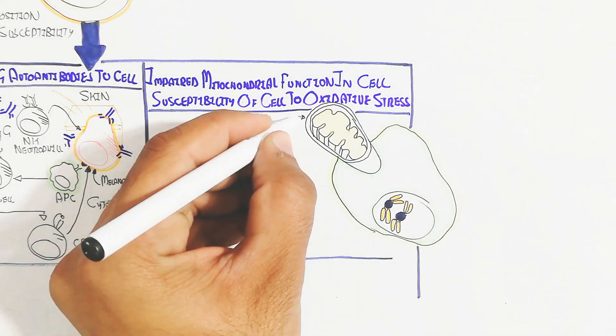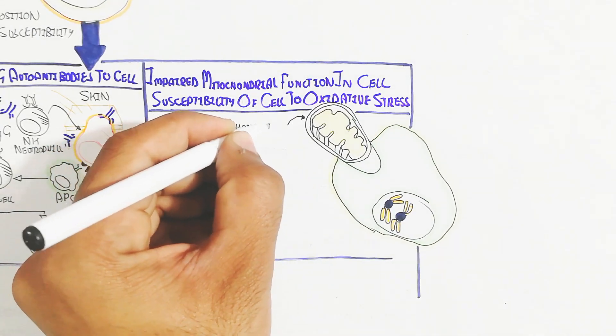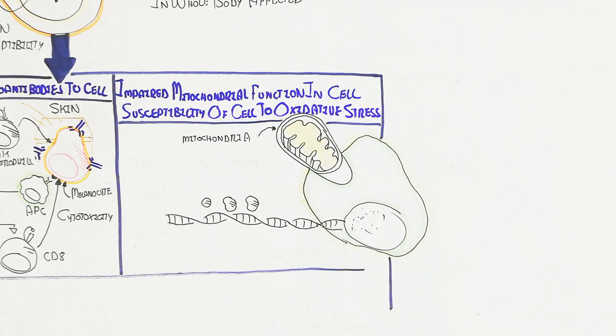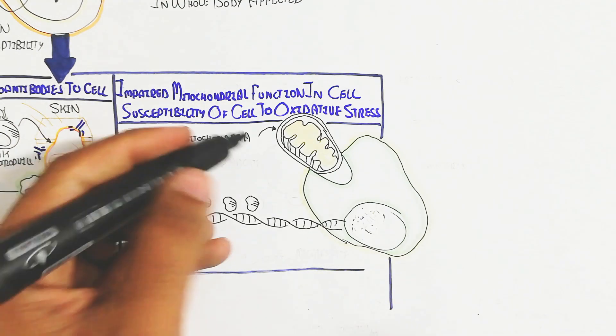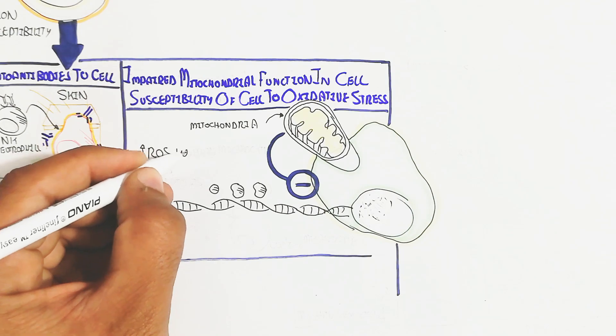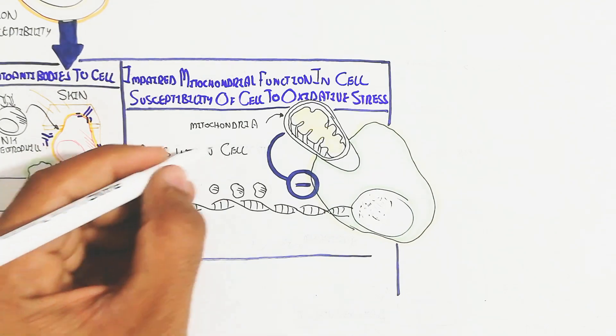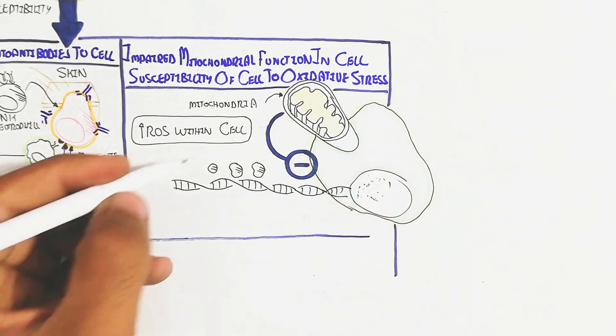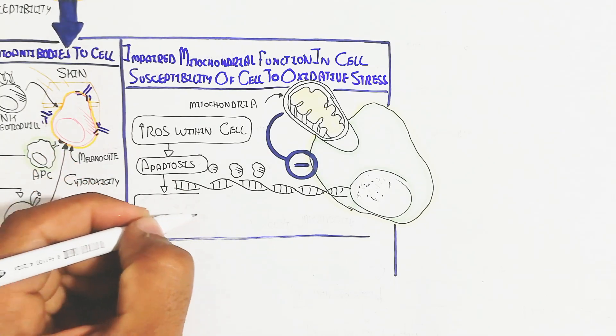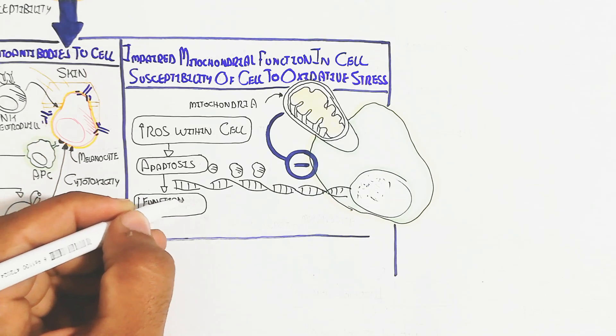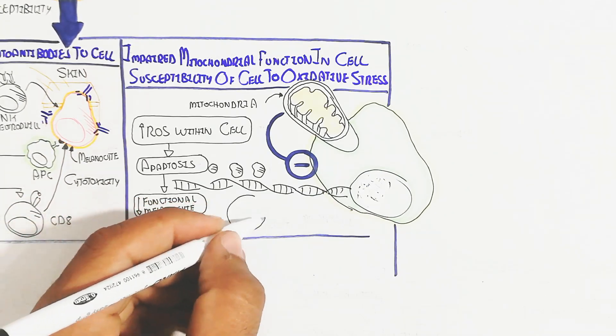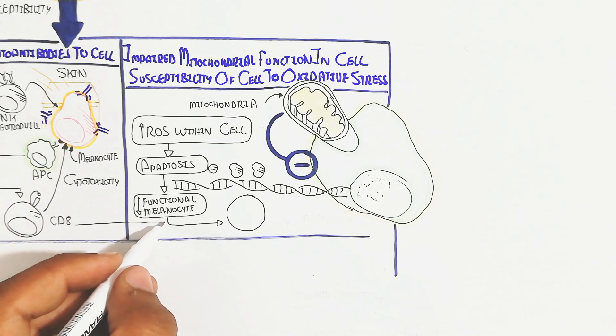On the other hand, impaired mitochondrial function in the cell increases susceptibility to oxidative stress. When mitochondria are damaged, oxidative stress leads to reactive oxygen species increasing within the cell, causing damage and apoptosis. This decreases functional melanocytes. CD8 T cells also attack the melanocyte.